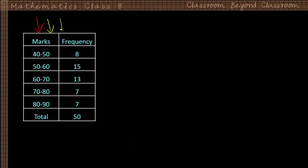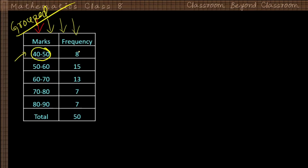Let us take another example: the marks obtained by 50 students in a class test. This is a grouped frequency distribution table, as discussed in the previous video. In the class interval for marks between 40 and 50, there are 8 students.